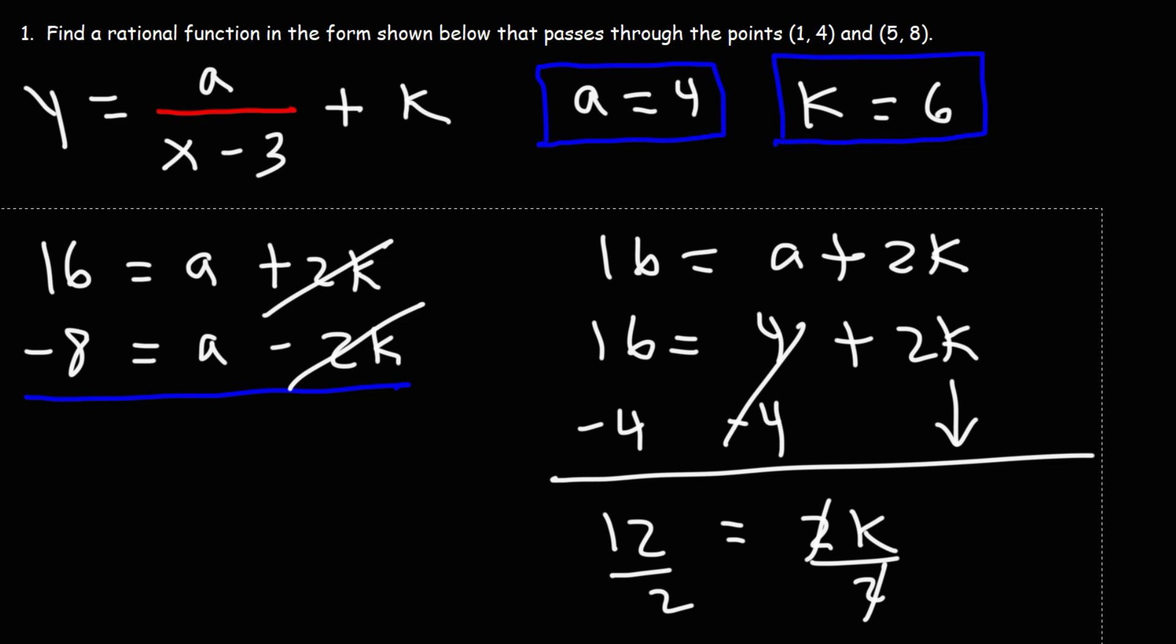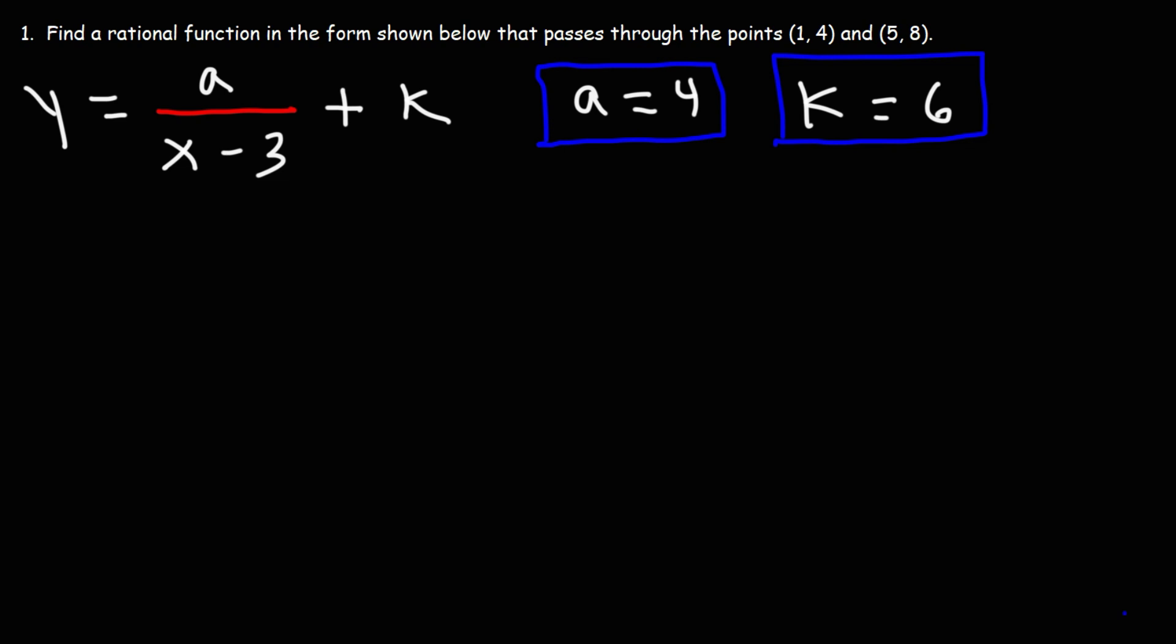Now that we have the values of a and k, we could plug it into the formula to get the function that passes through these two points. So it's going to be y equals 4 over x minus 3 plus 6. So this is the answer.